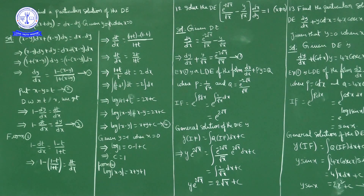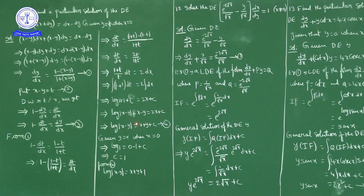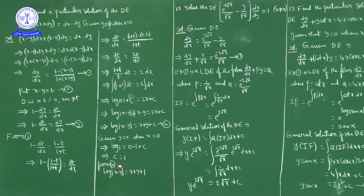General solution is complete. To find the particular solution, substitute x = 0 and y = −1: log|0 − (−1)| = 0 + (−1) + c, so log 1 = −1 + c, giving 0 = −1 + c, so c = 1. Substituting c = 1 back: log|x − y| = x + y + 1. This is the particular solution of the given differential equation.